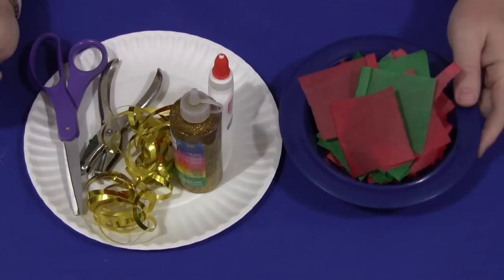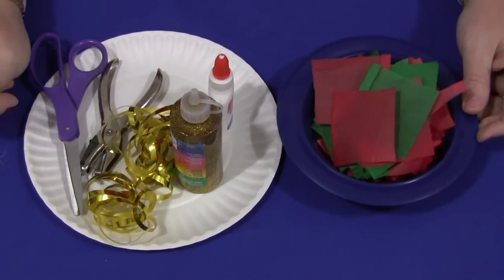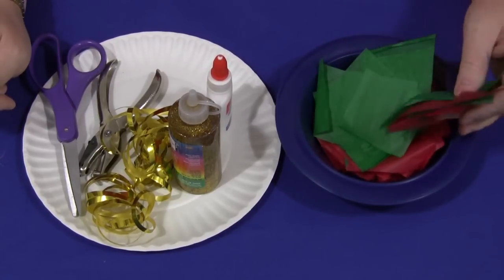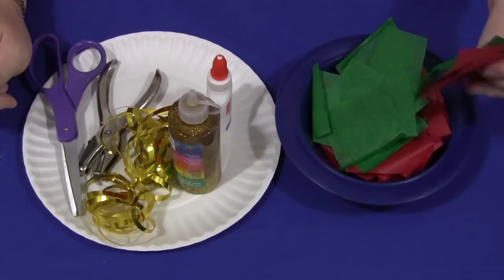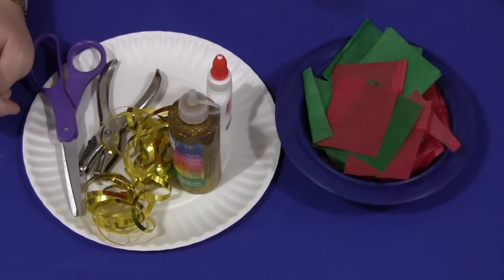All you need is tissue paper cut or torn into squares. Depending on the children you work with, they can do that themselves, or for younger children you can have a bowl with squares already prepared. Because we're close to Christmas I've chosen red and green, but you can use whatever colors you want.